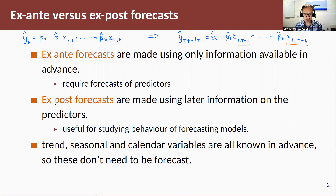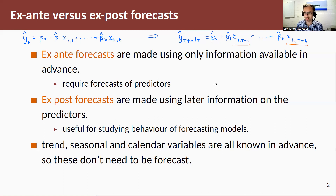The alternative is to do ex-post forecasting, where we use later information on the predictors. There are a couple of settings. The first setting: if I'm trying to predict a product's sales and one of my predictors is advertisement expenditure, the company might be willing to tell me what they're going to spend tomorrow, and I can pass that information onto the model. If I don't have that information, another setting is what we call scenario-based forecasting, where I assume some values for my future X's and see what effect that has on my forecasts.